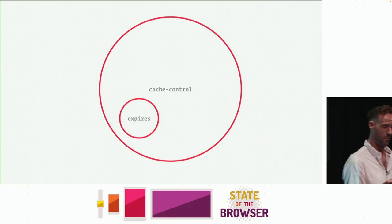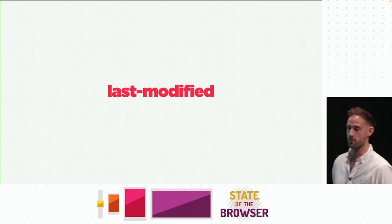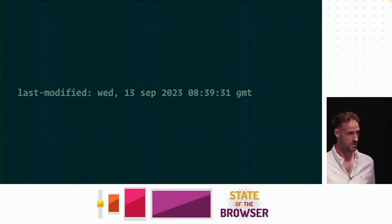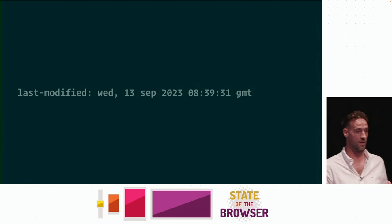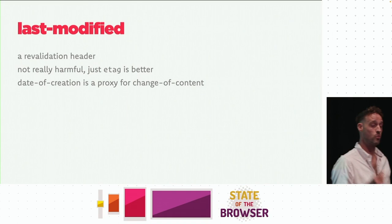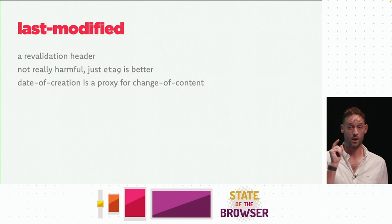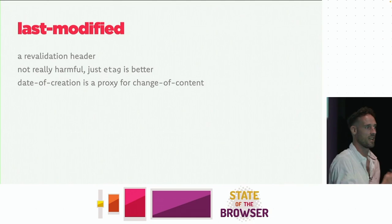The other header we want to get rid of — and this might come as a surprise — is Last-Modified. Last-Modified is very prevalent, and it's not harmful, but we've got better alternatives. It's an absolute date, usually in the past, saying 'this file was last changed on this date, so you can check if there have been any updates since then.' It's a revalidation header rather than a caching header. The problem is Last-Modified is a proxy for whether a file has changed — the file may still be the same, you may have just re-saved it — so you can get a lot of false positives.